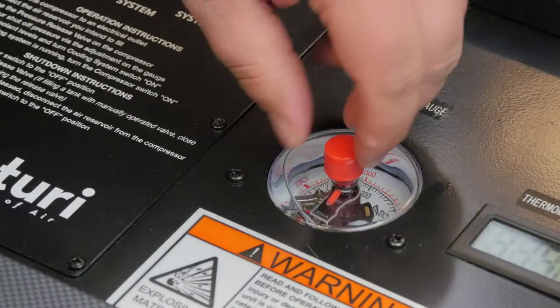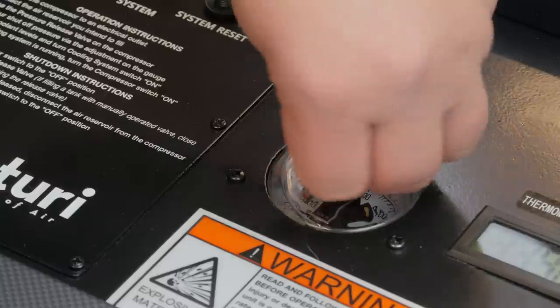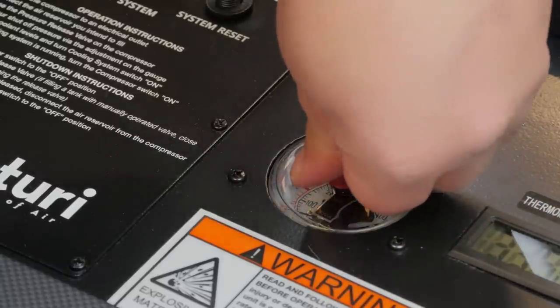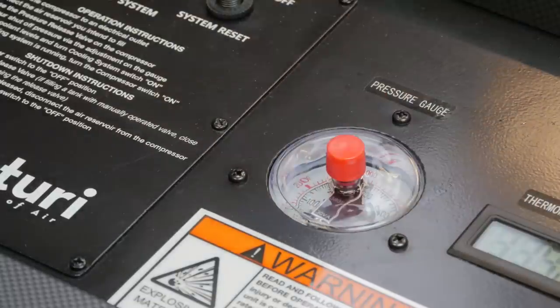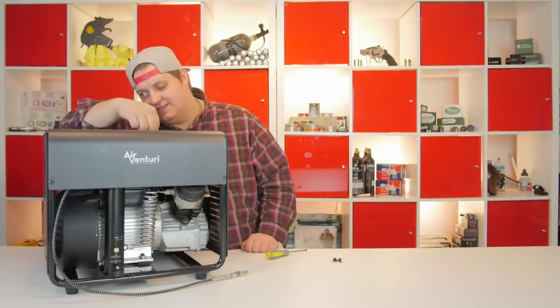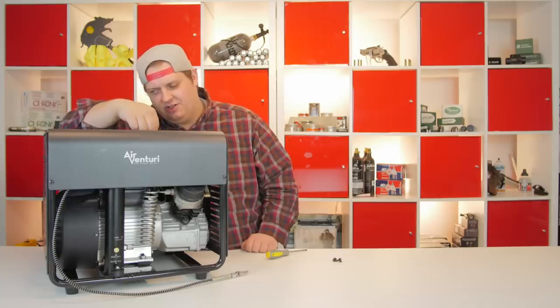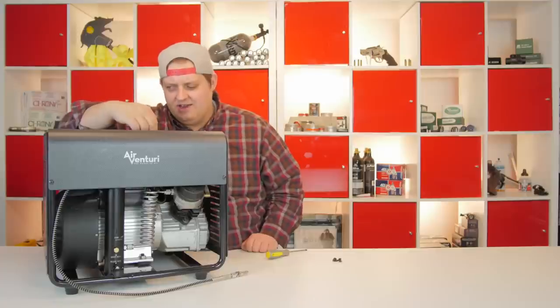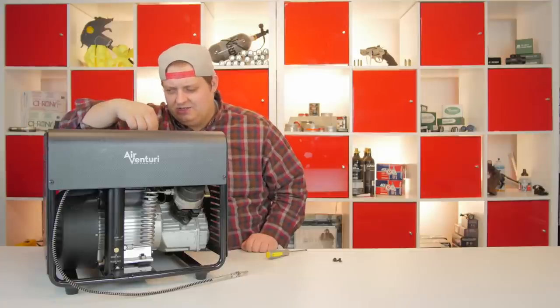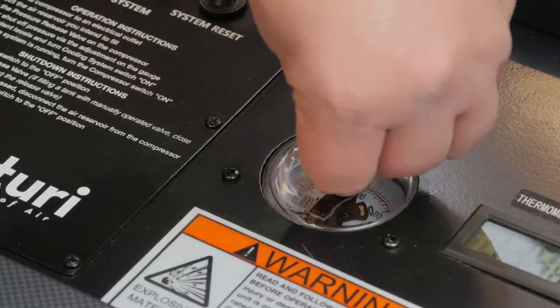But if you take that dial and you line it up with these two little arms on the gauge, and then you press down, there's a small plastic nub that will engage those two arms, and it'll allow you to move those arms inside the gauge. And you'll notice that one of those arms has a little red indicator on it, and that indicator is to set your shutoff pressure.